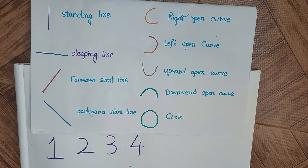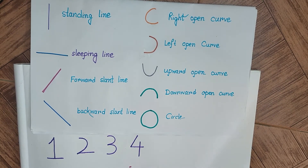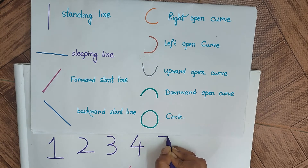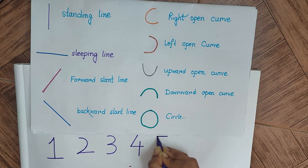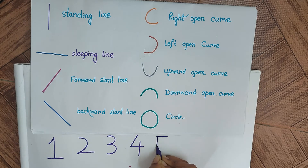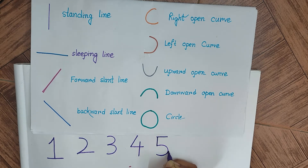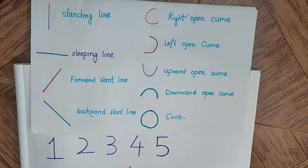Now we will write number 5. For number 5, let us see: first a slipping line, then from the left a small standing line, then a left open curve from the bottom of the standing line gives us number 5. Now we will go to number 6.